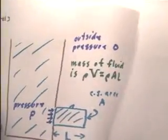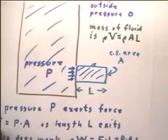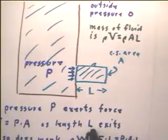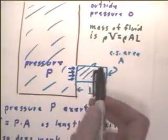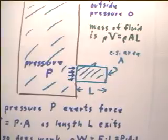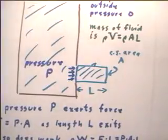Now, let's see how that works out. We see that the pressure P exerts the force F equal to P times A, pressure times area, as the length L exits the container. And therefore, the pressure P does work. It's force times distance. Now the distance is L, the force is F, F is equal to P times A. So the work done is P times A times L. Force is P times A, distance is L.